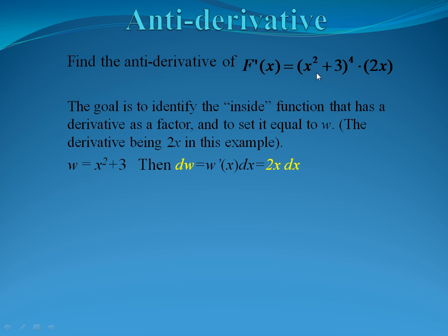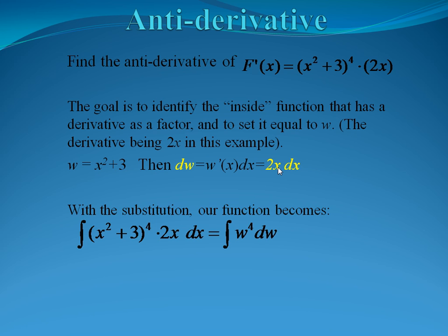We're going to let w be x squared plus 3. Generally, you'll substitute w equal to whatever is raised to the power. Then our dw, or derivative, is going to be 2x dx, because the 3 disappears since it's a constant. Now we have our w and our dw. We write this as the integral of (x squared plus 3) to the fourth times 2x dx. With our substitution, we put w in for x squared plus 3, and instead of 2x dx we know that's equivalent to dw. So now we have the integral of w to the fourth dw.